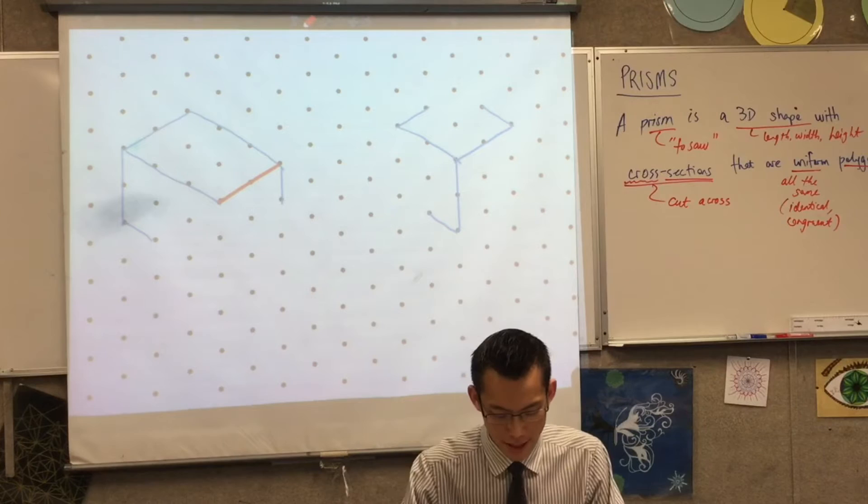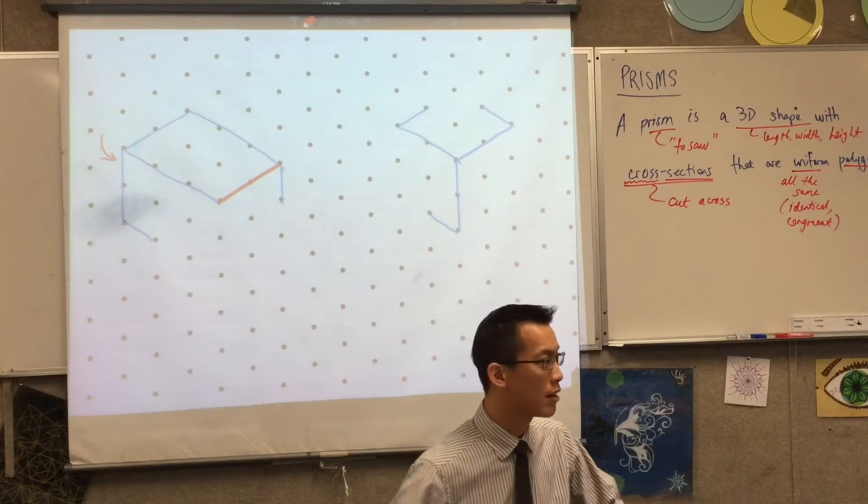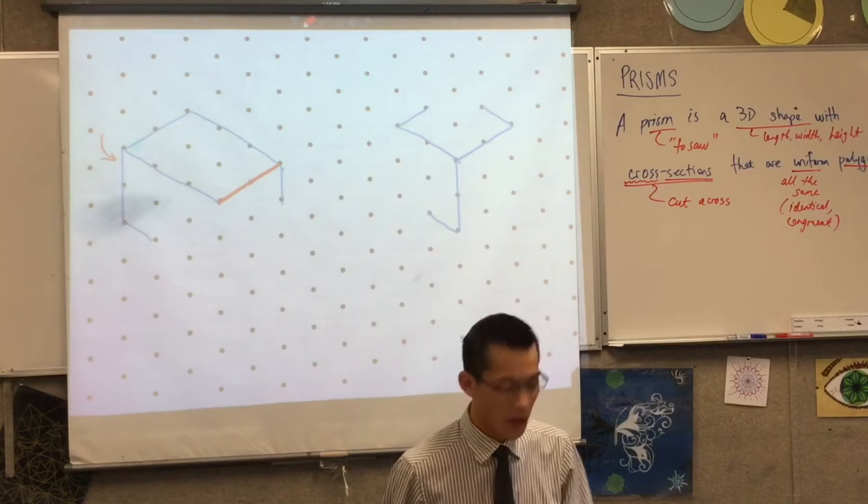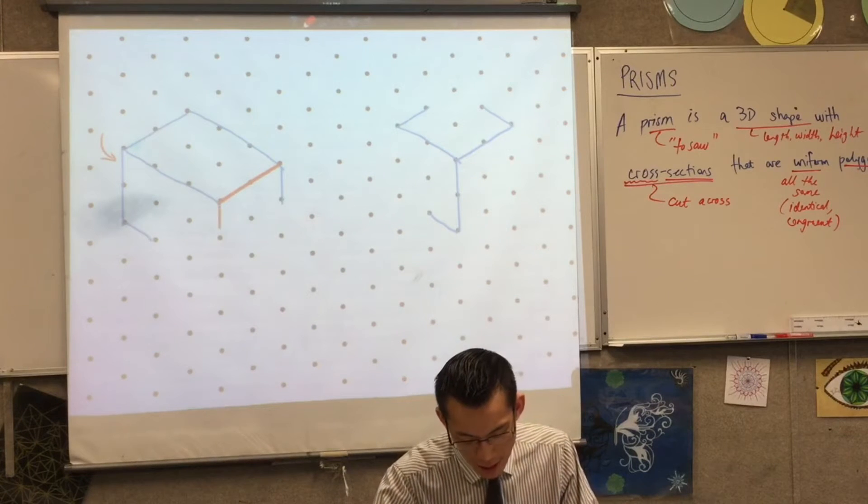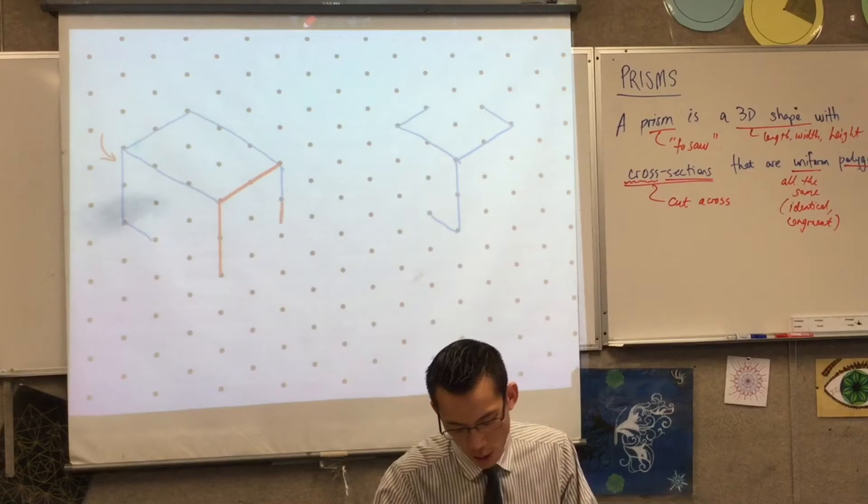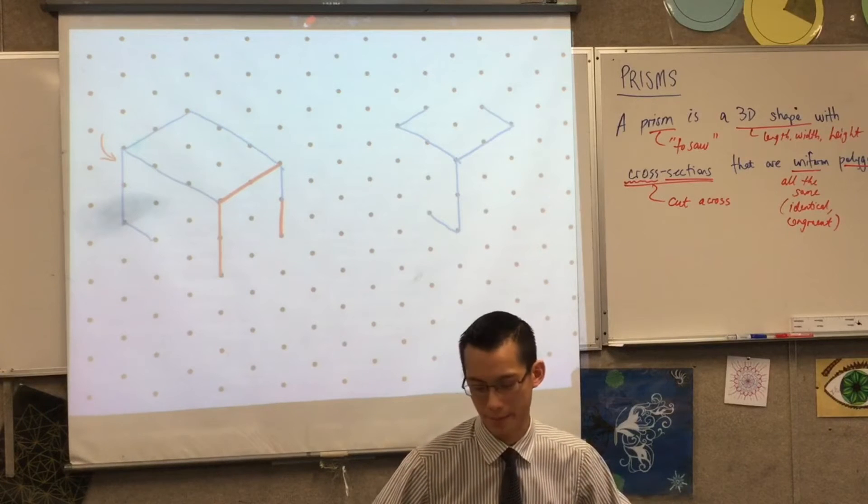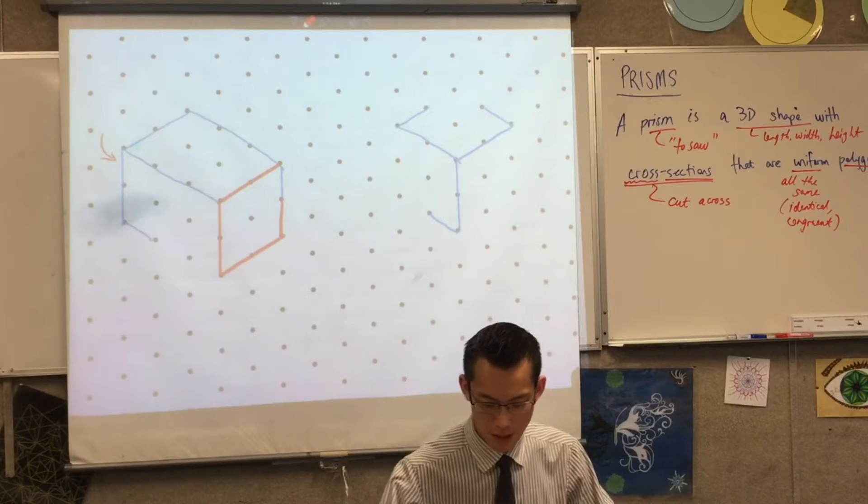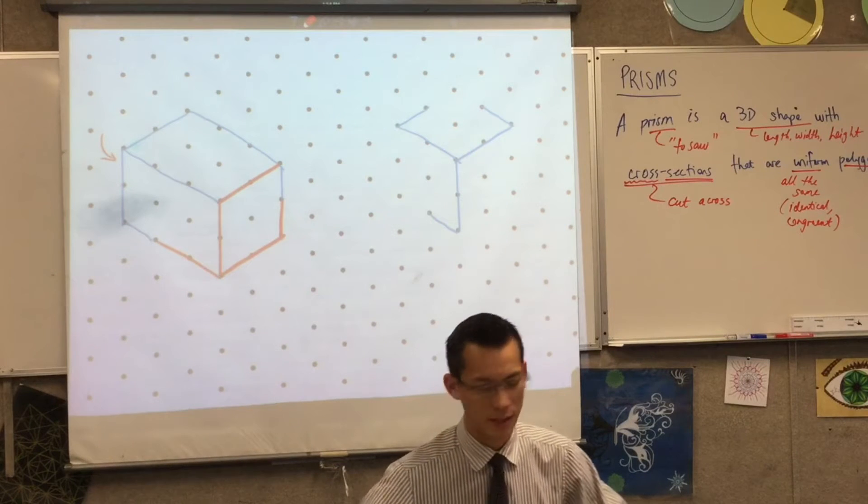In the same way, you see how this edge that's right here on the left-hand side, you see how it goes down two units. So that means all of these other edges must also go down two units with it. And then you can pretty much see, I think we have our complete 3D shape here. Now, I just need to connect the rest of the dots.